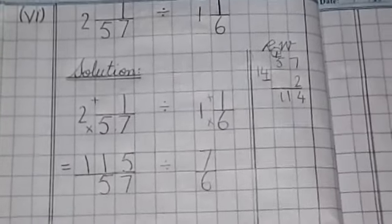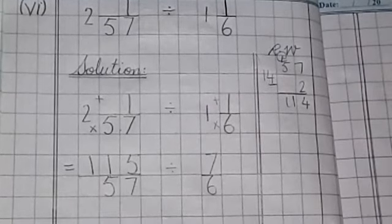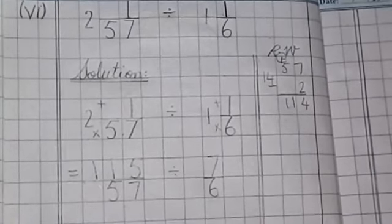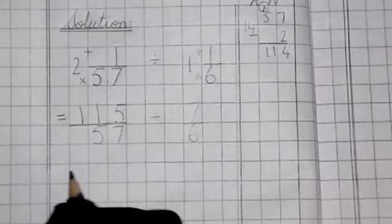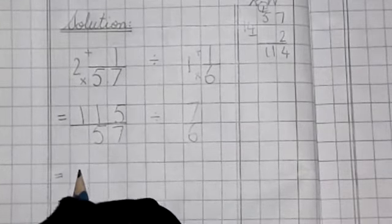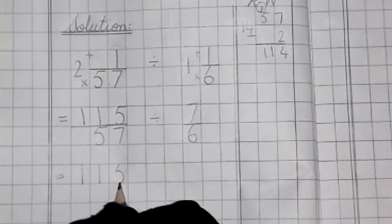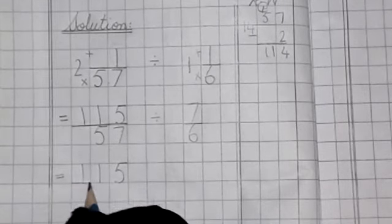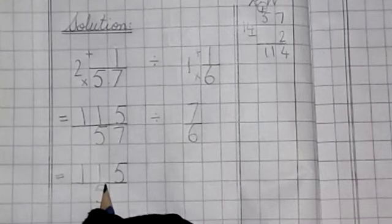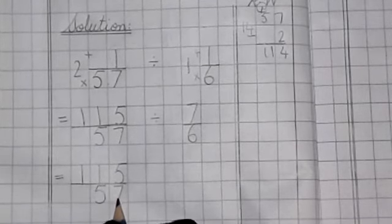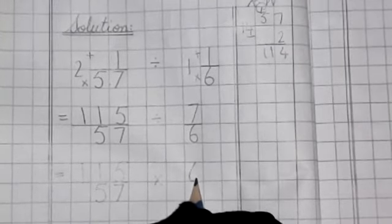Okay, now, kids, we have the same question as we had previously done. Now, we change the sign of divide to multiplying and right hand, 7 by 6, reciprocate. Okay, so let's start. Equality sign, 115 by 57, divide sign. We change the sign, multiply, this will be 6 by 7.